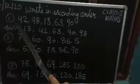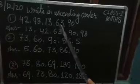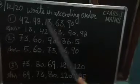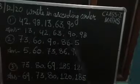See the first question. Some numbers are here. 42, 98, 13, 63 and 90. Then you have to write the number from smallest to the largest.